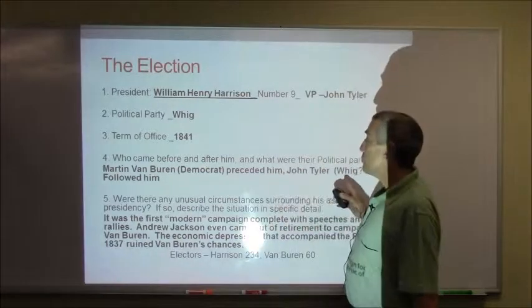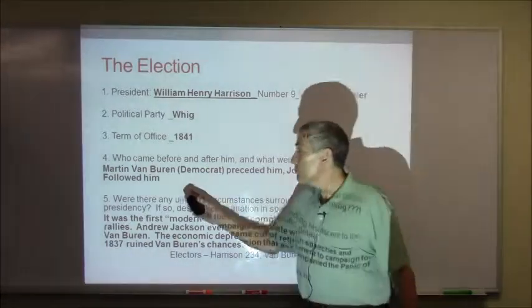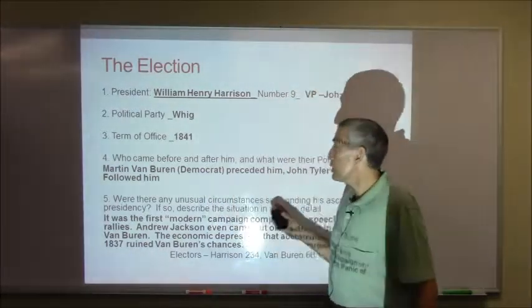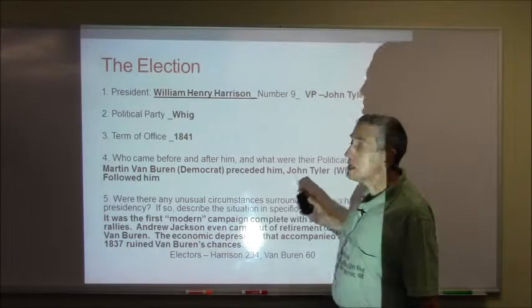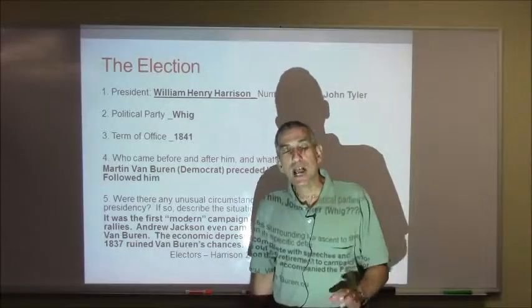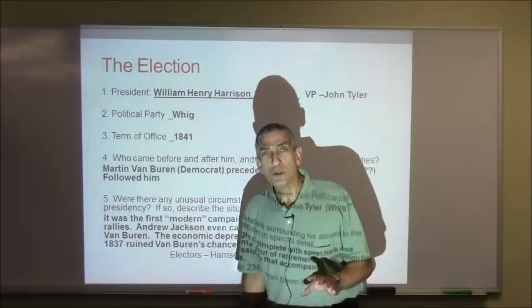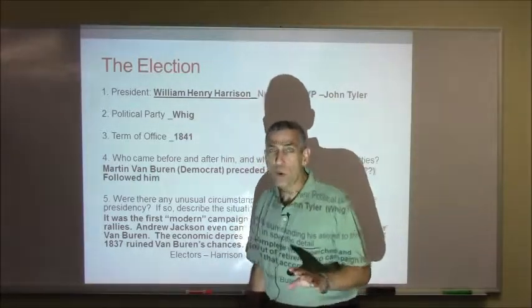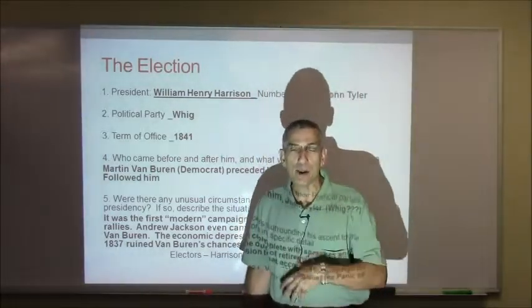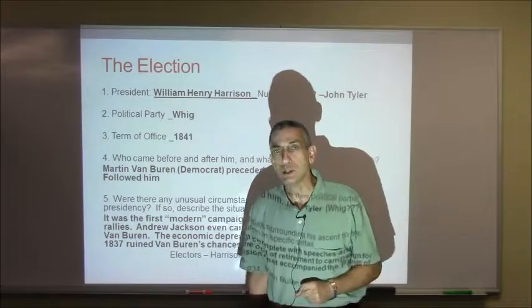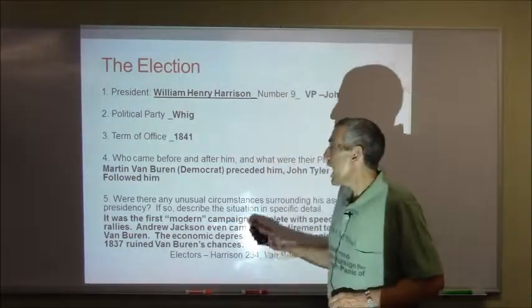Who came before him and after him? Martin Van Buren was a Democrat who preceded him, and John Tyler followed him. John Tyler wanted to be called a Whig, but he acted an awful lot like a Jacksonian Democrat. But when we take a look at John Tyler, you'll see what I'm talking about.